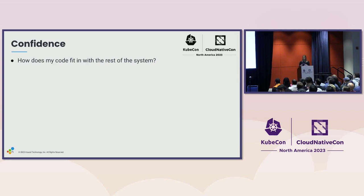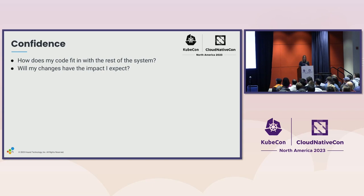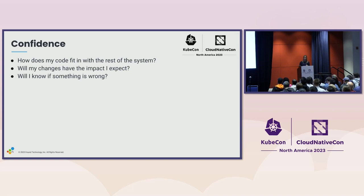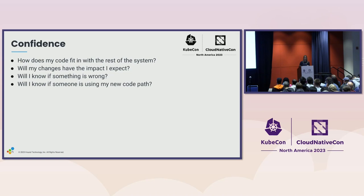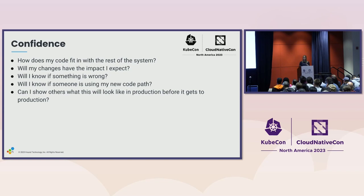Think about when you're dealing with a monolith or a really large system of services — you want to know how your code, how that small feature you're working on, fits in with the rest of the system. You want to know if the changes you're making are going to have the impact you expect, and if you're actually going to hit those code paths. You want to know if something's wrong. As we saw from that graph earlier, it was pretty obvious something was wrong — but without that instrumentation, would we have known? You want to know if someone's using your new feature. By being able to check that locally, you can know it's going to work in production. Can I see whatever I do here locally, and know exactly what it's going to look like in production? And then when something does go wrong, be able to narrow down where things have gone wrong and iterate and improve from there.